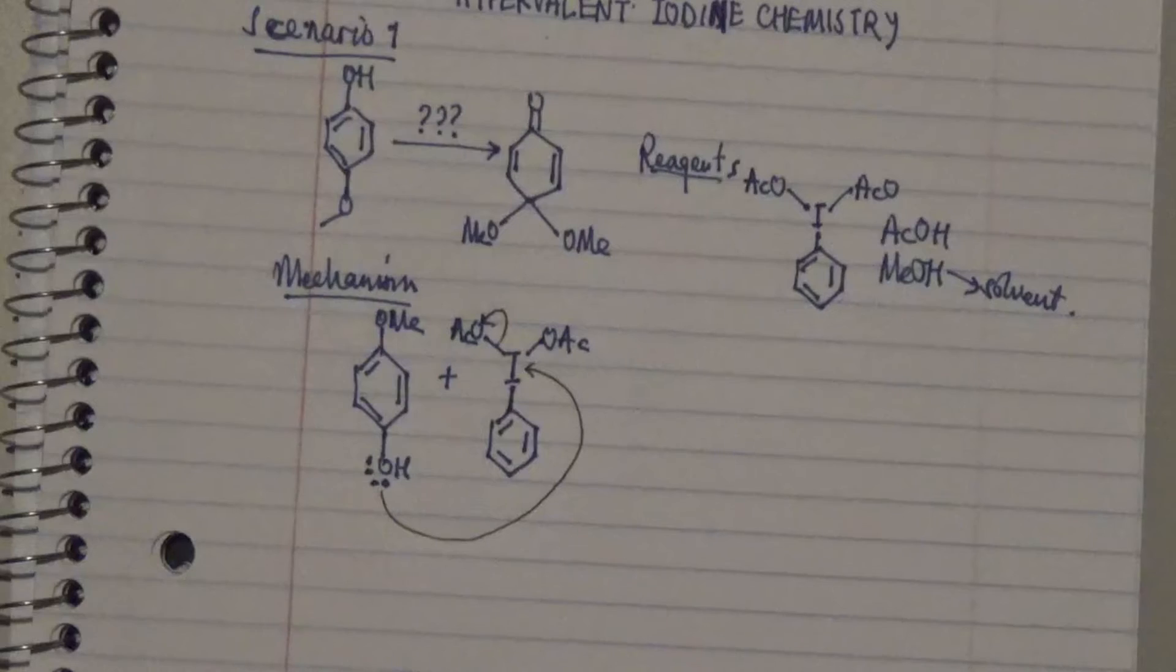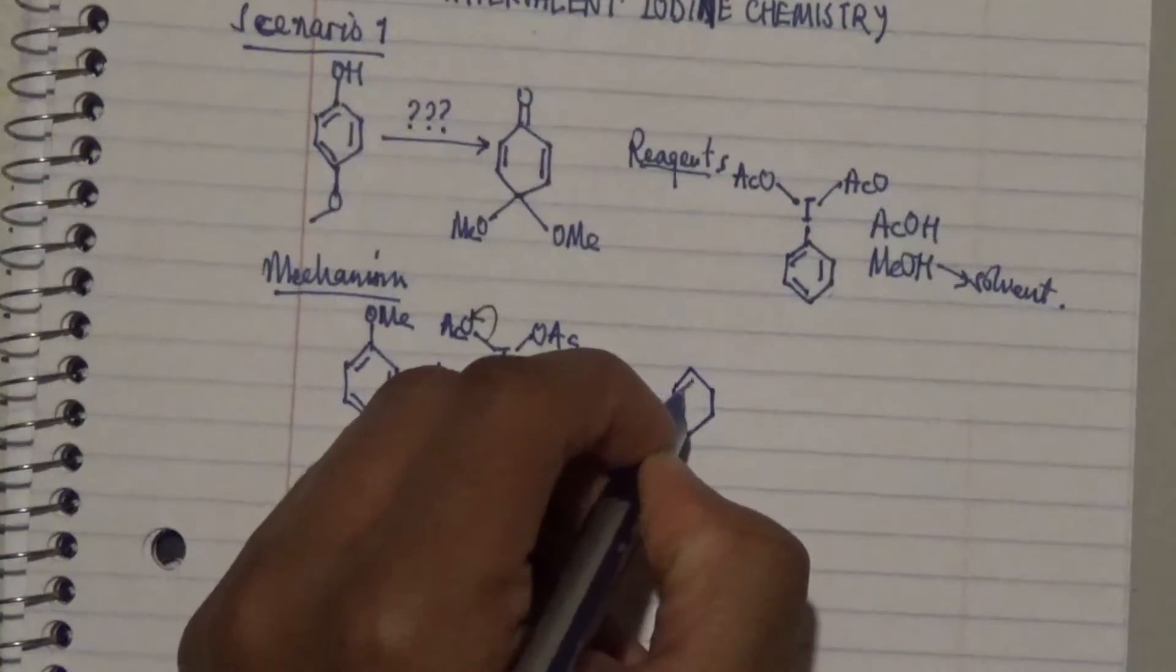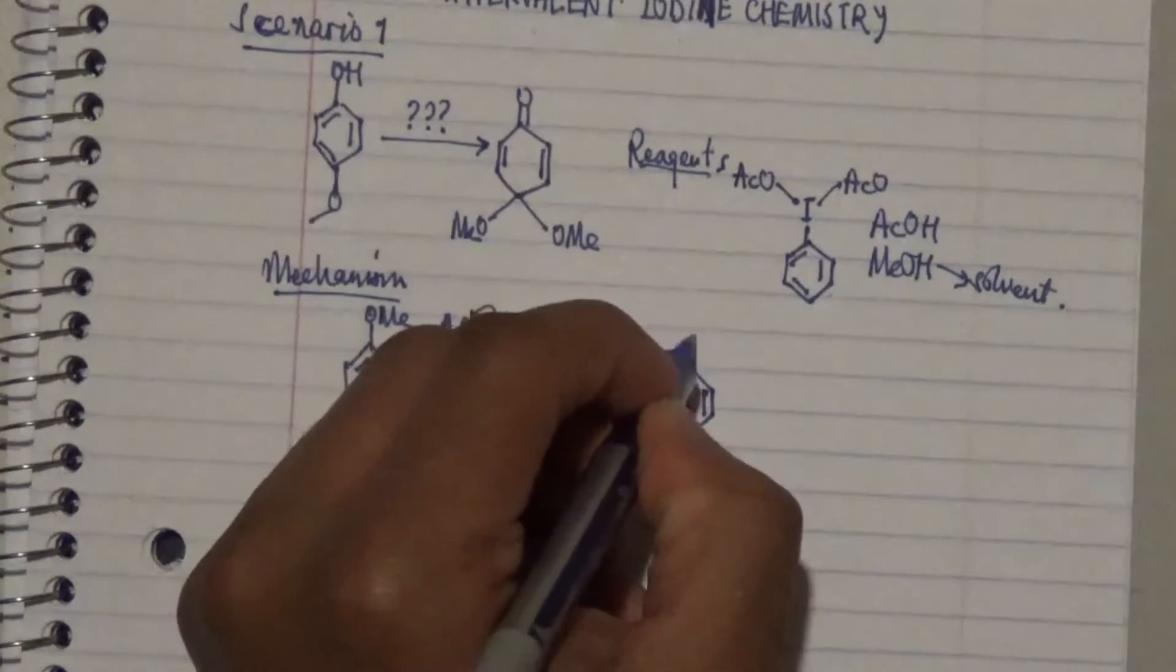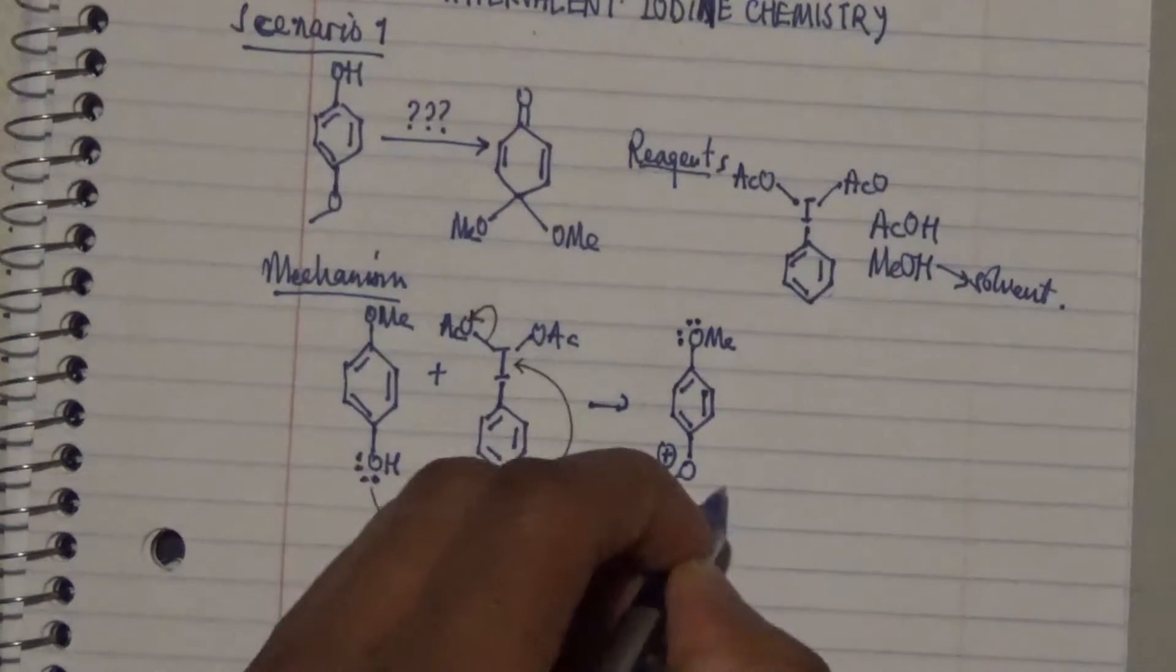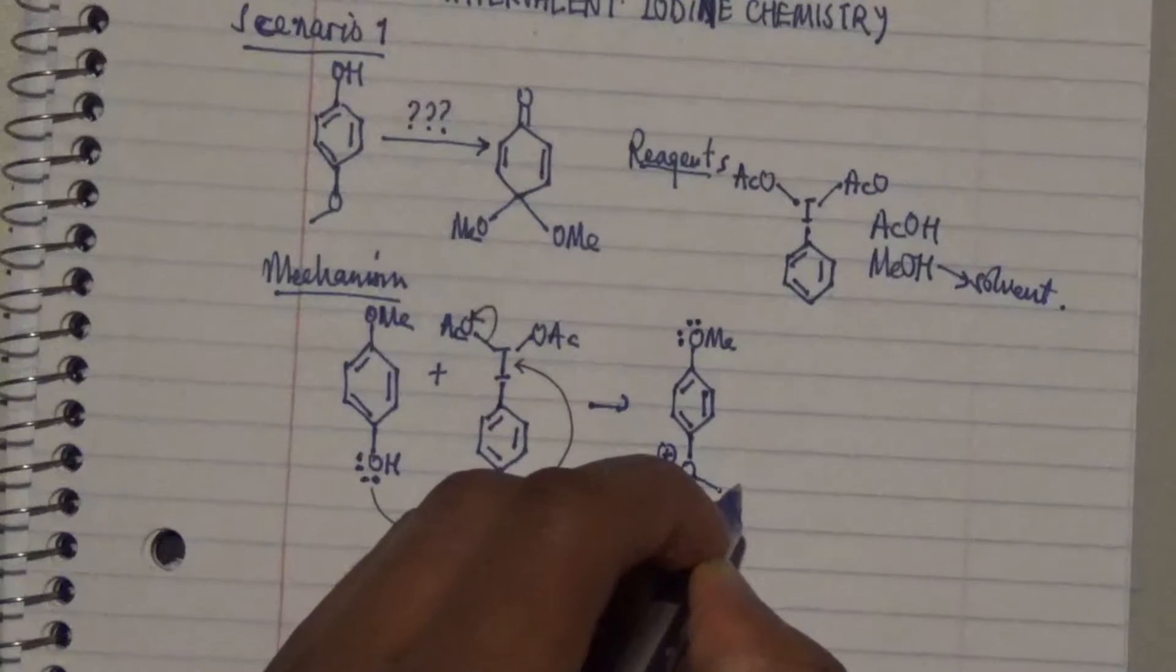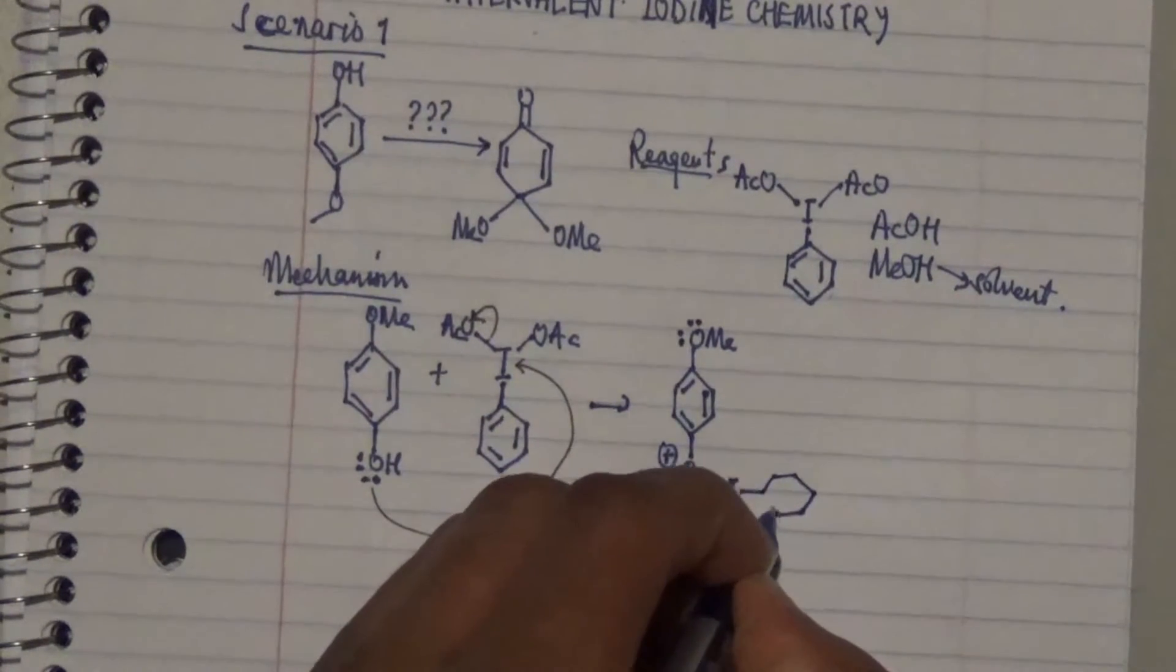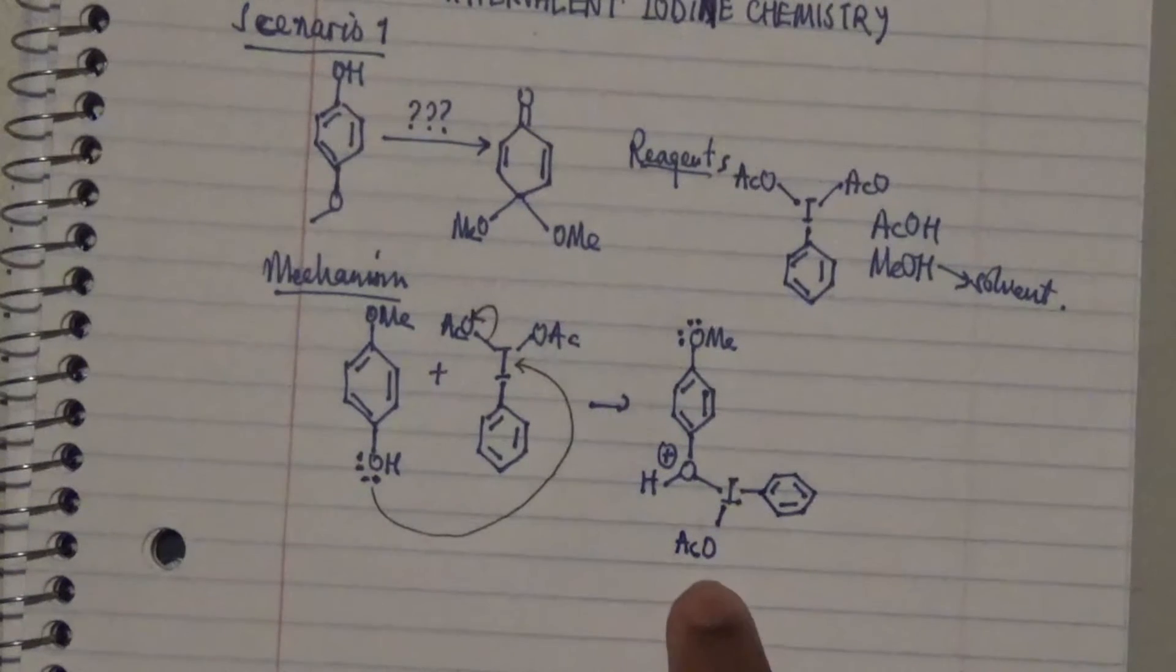As a result of that, as it attacks this iodide, it kicks off this particular group by an SN2 reaction. What that gives is a fused product, or I'll say an intermediate, with a positive charge on the oxygen.